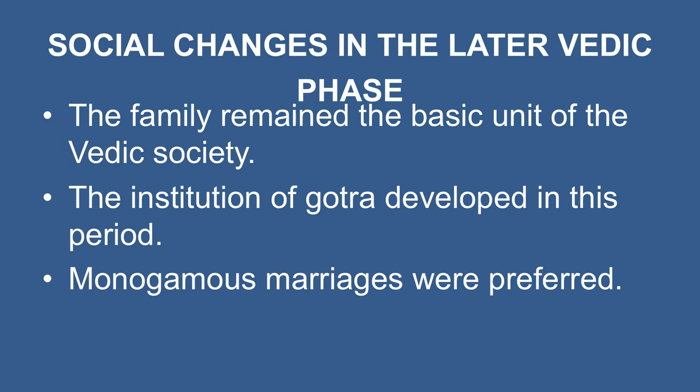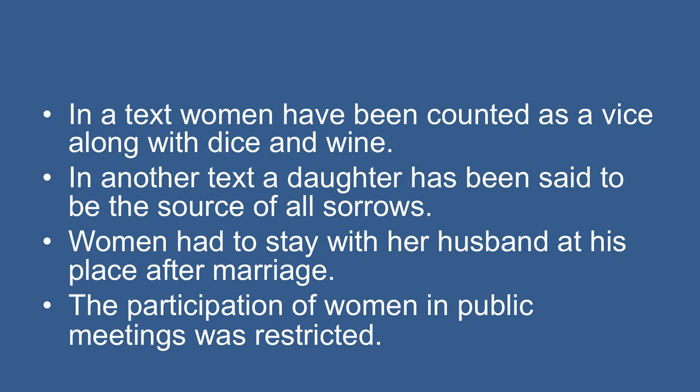The family remained the basic unit of the Vedic society, however its composition underwent a change. The later Vedic family became large enough to be called a joint family, with three or four generations living together. The institution of Gotra developed in this period — meaning people descended from a common ancestor — and marriages between members of the same Gotra could not take place. Some restrictions on women appeared during this period: in one text, women have been counted as a vice along with dice and wine; in another, a daughter is called a source of all sorrows. The participation of women in public meetings was restricted.